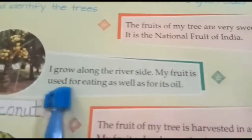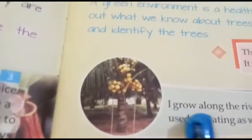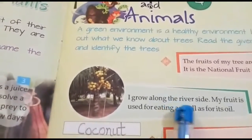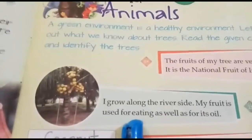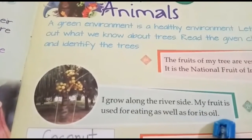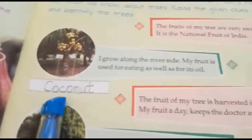Second: I grow along the riverside. My fruit is used for eating as well as for its oil. The fruit of my tree is used for eating as well as for its oil. The answer is coconut.